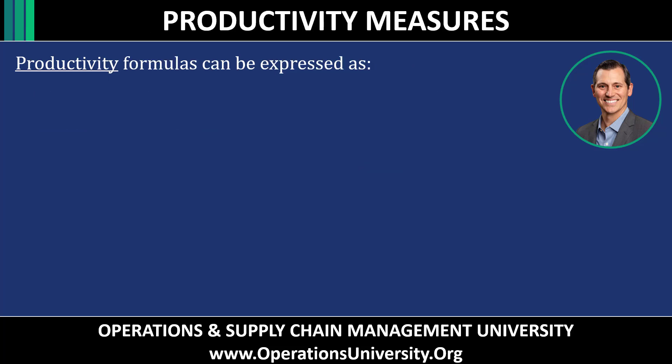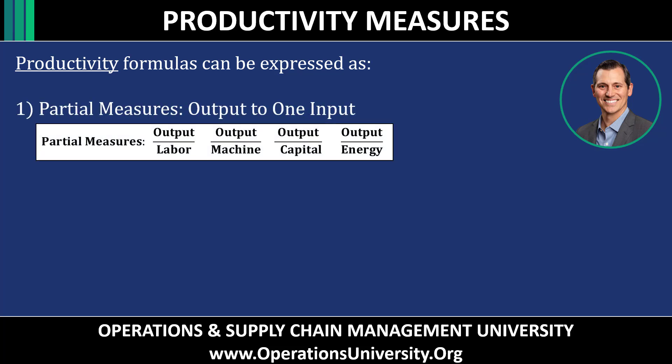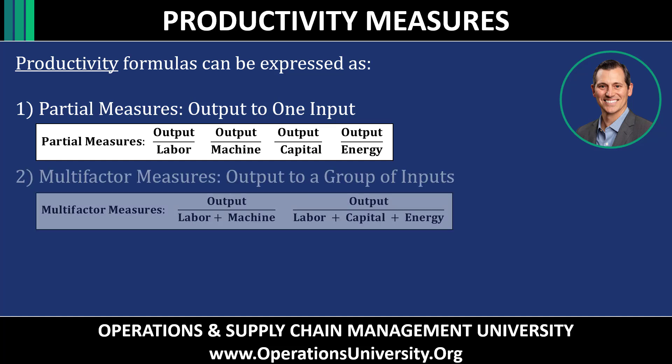We're going to go over three different productivity formulas. The first is partial measures, also called single-factor productivity, because you are looking at total outputs versus one single input. It's a very useful formula when comparing one measure of the business like labor or machinery. The second formula is multi-factor measures, which is a great gauge for measuring productivity because theoretically if an organization hires more laborers or buys more capital equipment, they should become more productive, and this formula helps us compare that.